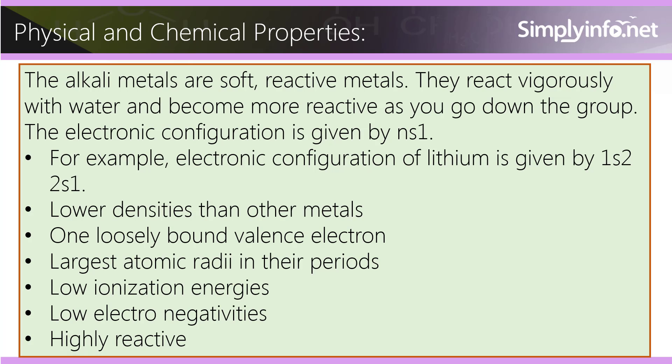Alkali metals have lower densities than other metals, one loosely bound valence electron, and the largest atomic radii in their periods. They also have low ionization energies, low electronegativities, and are highly reactive.